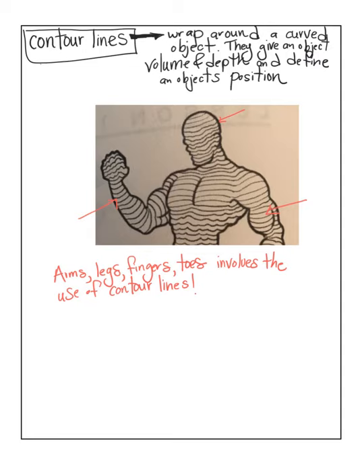Today we are going to learn about contour lines. Contour lines are lines that wrap around a curved object — they give an object volume and depth and define an object's position, so that means if an arm is in front or an arm is behind, these lines are curving different ways. We find contour lines in human forms and figures — arms, legs, fingers, toes all involve the use of contour lines.